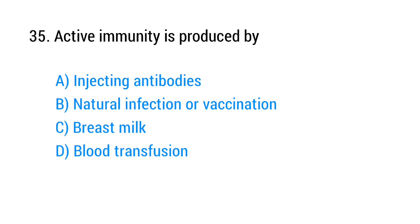Question number 35. Active immunity is produced by? The right answer is option B: Natural infection or vaccination.